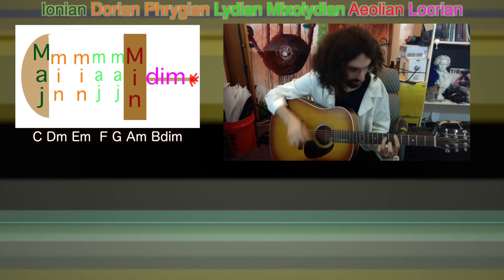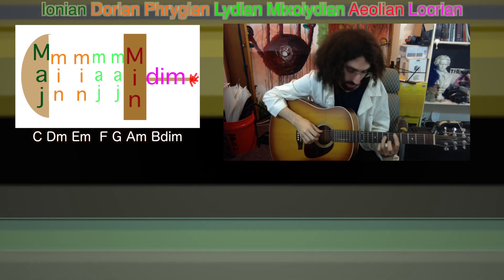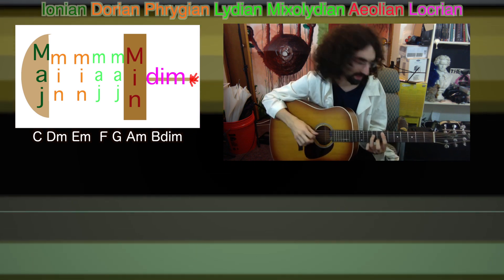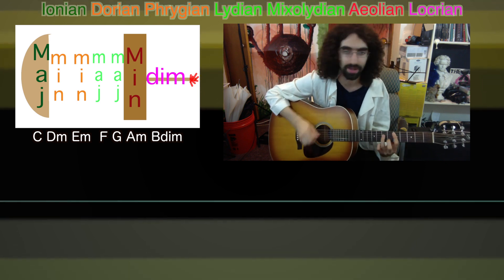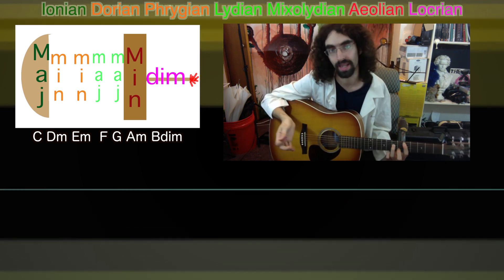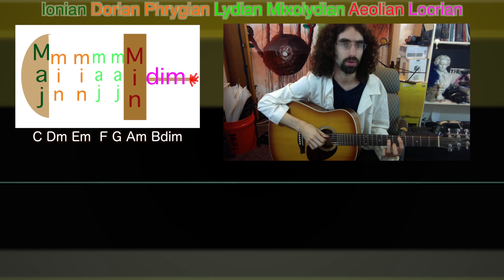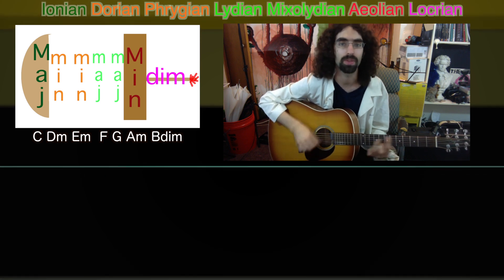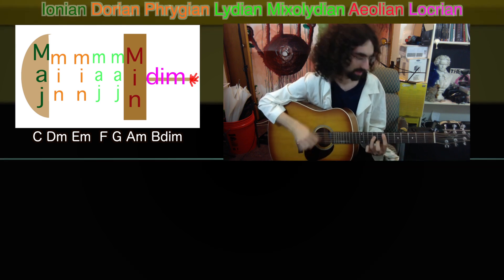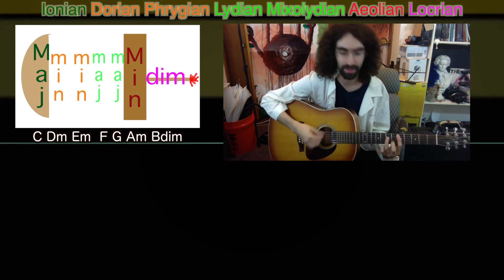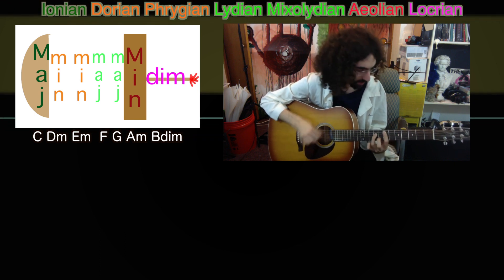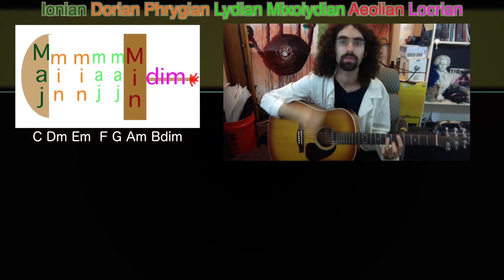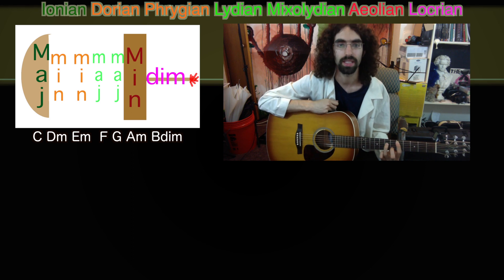So here we go: D minor chord, moving up to its neighbor E minor, then down to its neighbor C, and back to D minor. That's one way to get a good Dorian progression — minor, up to minor, down to major, back to minor. [plays] That's D Dorian.